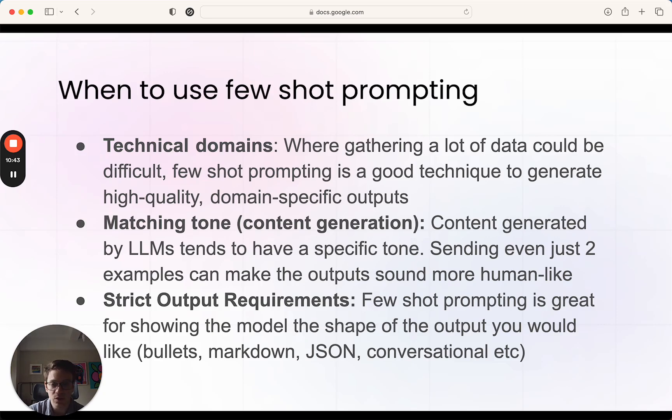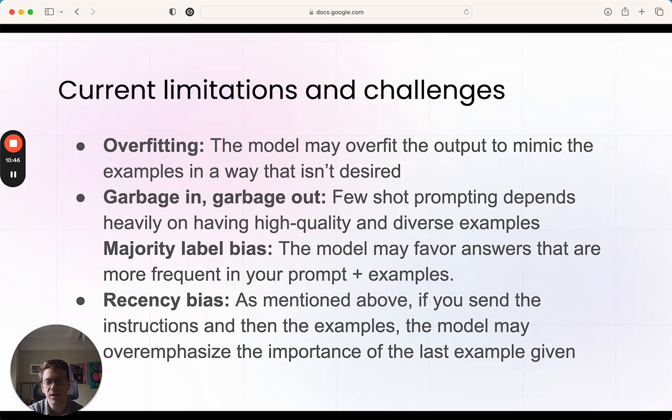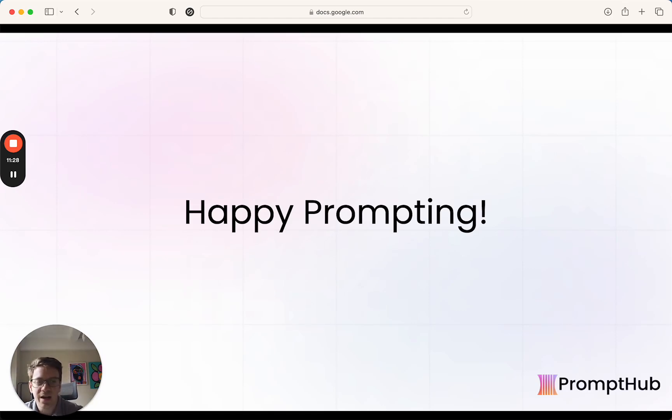Current limitations: Overfitting is definitely a worry. The model might mimic an example more strongly than you would like, so that's why you do want to have a couple and have them be a diverse set. Garbage in, garbage out—that's always going to be a worry. If you send bad examples, you're going to get bad outputs. Majority label bias—basically this is probably not as big of a worry with the newer, smarter models, but the model may favor answers that are more frequent in your examples. Thinking back to our movie sentiment analyzer, if you're sending more positive examples, you might have a slight skew to saying a piece of feedback is positive. And then recency bias, as we've touched on.